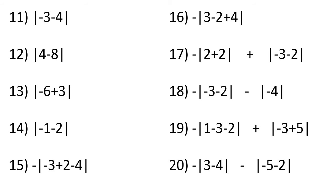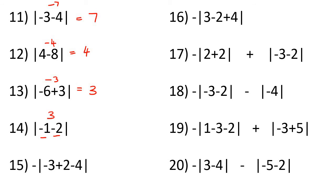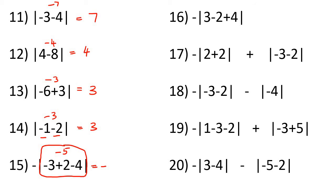Now we have another 10 questions. For this one, minus 3 minus 4 is minus 7, but the absolute value always becomes positive, so it'll be positive 7. Then 4 minus 8 is minus 4, but the absolute value makes it positive 4. Minus 6 plus 3 is minus 3, but the absolute value makes it positive 3. Minus 1 minus 2 is minus 3, and the absolute value makes it positive 3. This one has a negative in the front, so we keep that. Minus 3 plus 2 is minus 1, minus 1 minus 4 is minus 5, the absolute value makes it 5, but the negative stays in front, so it's negative 5.